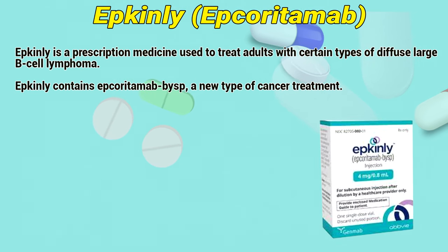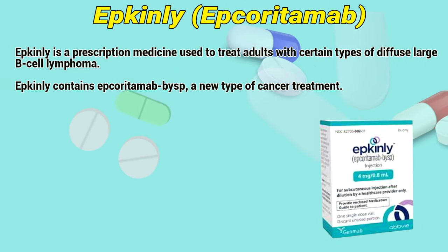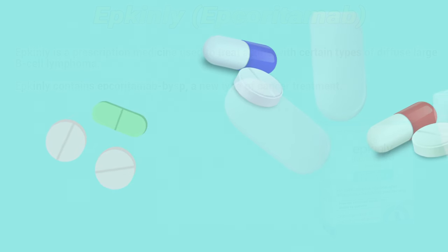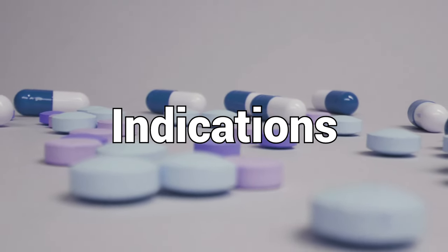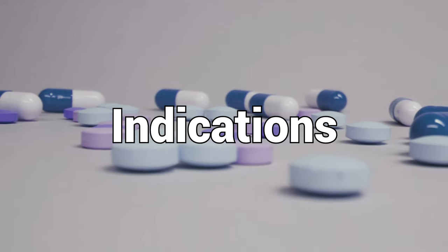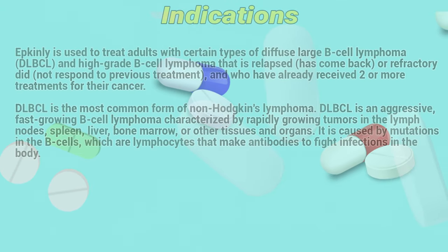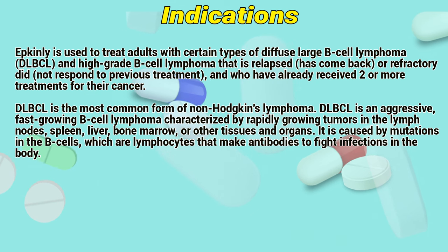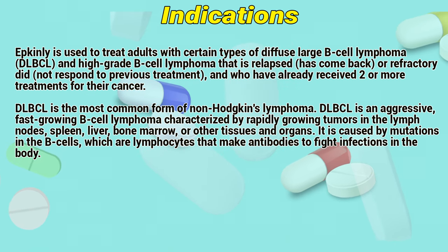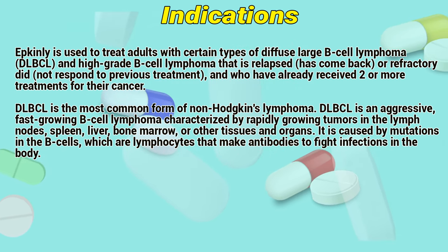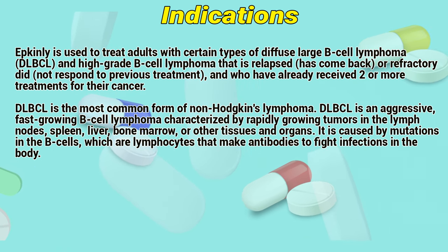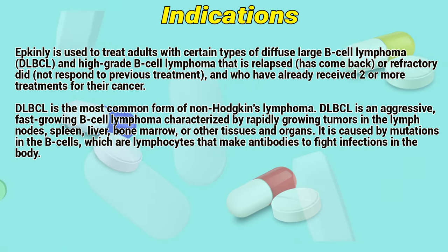Epkenly is a prescription medicine used to treat adults with certain types of diffuse large B-cell lymphoma. Epkenly contains Epcaritimab, a new type of cancer treatment. Epkenly is indicated for adults with certain types of diffuse large B-cell lymphoma or high-grade B-cell lymphoma that is relapsed, has come back, or refractory with no response to previous treatment, and who have already received two or more treatments for their cancer.